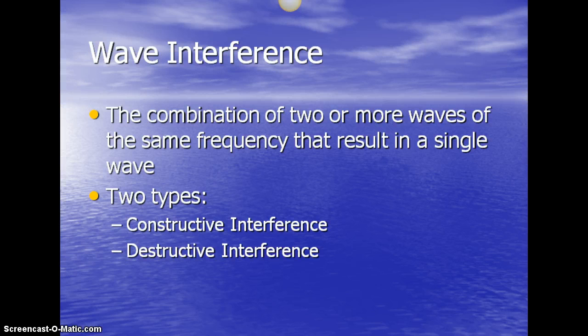So first, the definition for wave interference is just the combination of two or more waves of the same frequency that result in a single wave. So there's two main types,